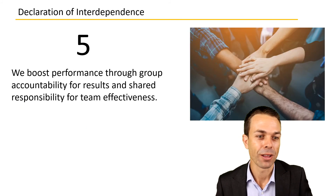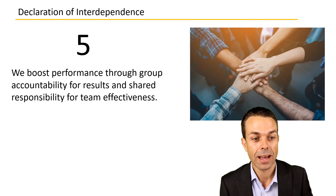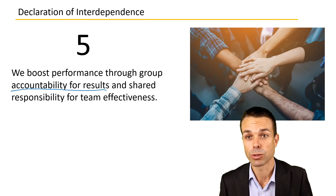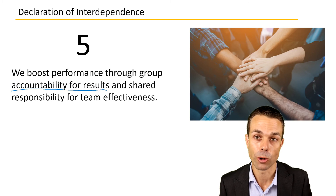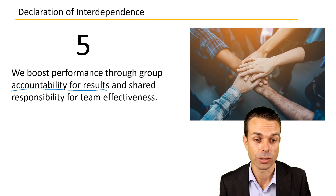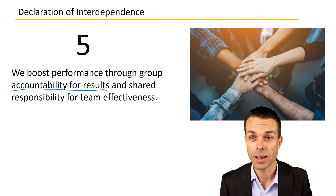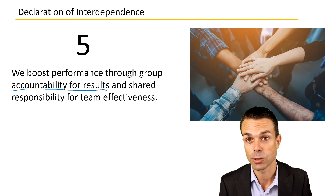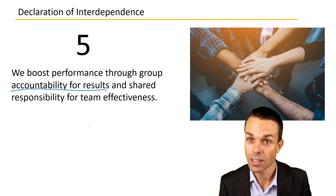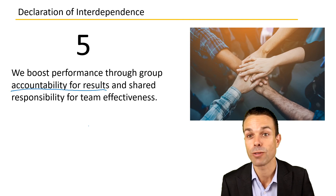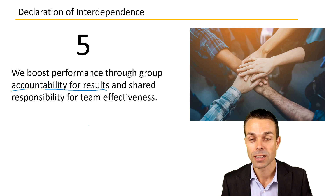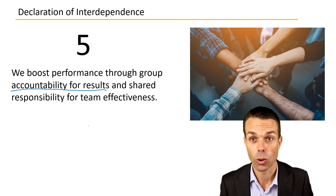Principle number five: we boost performance through group accountability for results and shared responsibility for team effectiveness. Everyone is responsible for quality on an Agile project. Is the designer responsible for quality? Yes. Is the product owner? Yes. Is the customer? Yes. Are the developers? Absolutely. Everyone is working towards the same shared goal, and that's one of the most important things.